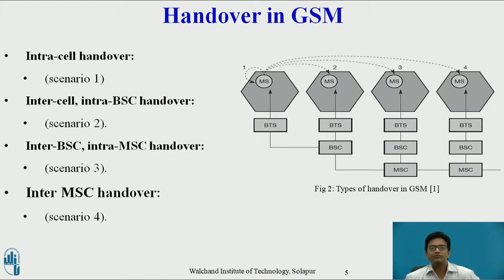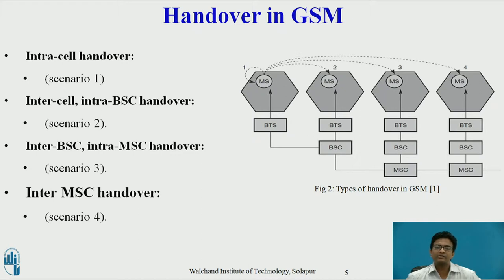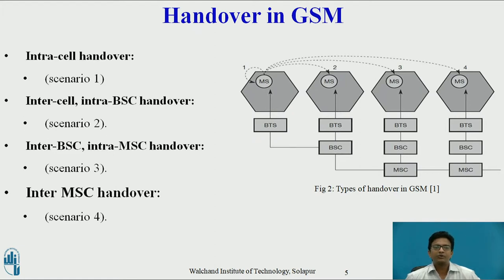In scenario three, it is known as InterBSC IntraMSC handover. Since a BSC only controls a limited number of cells, GSM must also perform handover between cells controlled by different BSCs — BSC stands for Base Station Controller. This handover is controlled by the MSC. The fourth type, scenario four, is InterMSC handover, required between two cells belonging to different MSCs — MSC stands for Mobile Switching Center. In this case, both MSCs perform the handover together.